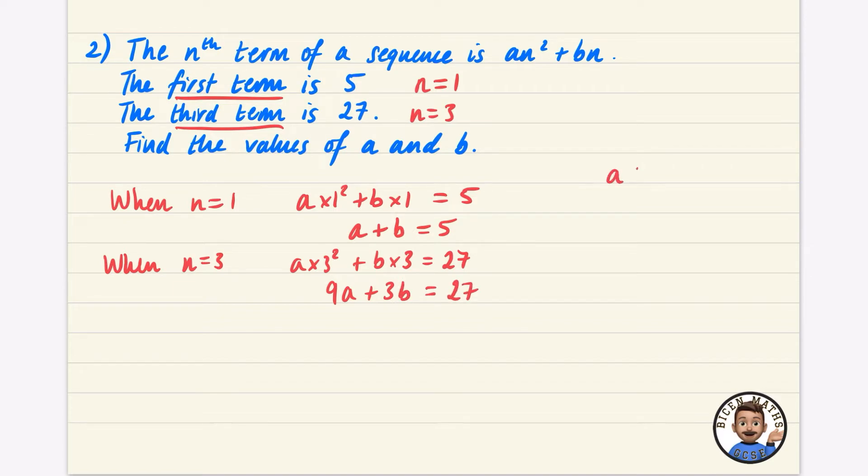Well, look what we've got here. We've got a plus b equals 5, and 9a plus 3b is equal to 27. All we want to do is find out the values of a and b. So we're actually going to be doing a simultaneous equation. We're not going to be doing anything to do with the nth term. We're going to solve these simultaneously.